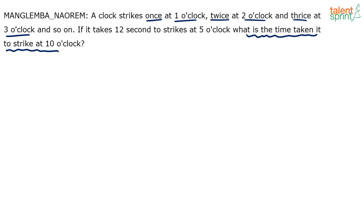For example, if you suddenly hear the clock striking — one, two, three, four, five, six, seven, eight — it means it is eight p.m. For general knowledge, there is one such clock at the Salar Jung Museum in Hyderabad, a very popular museum. It has a big clock where a bird comes out every hour and rings a bell, following the same concept — ringing once at one o'clock, twice at two o'clock, and so on.